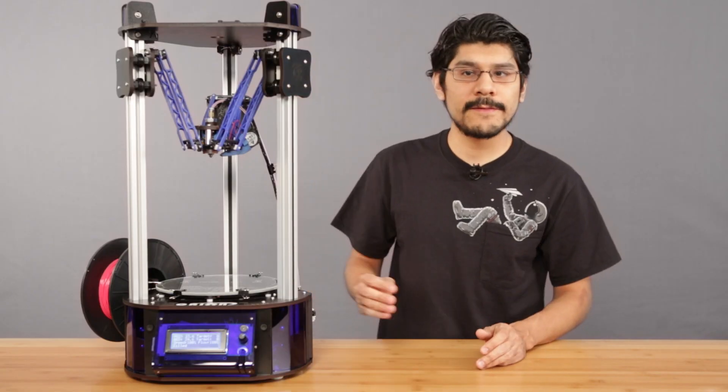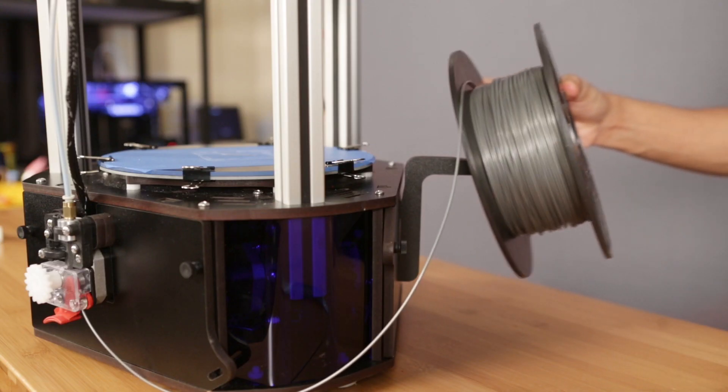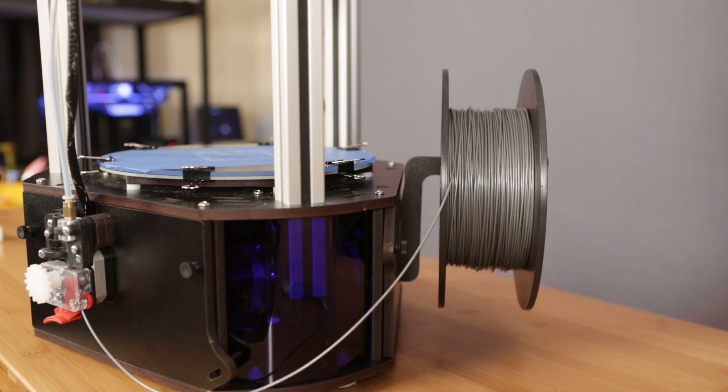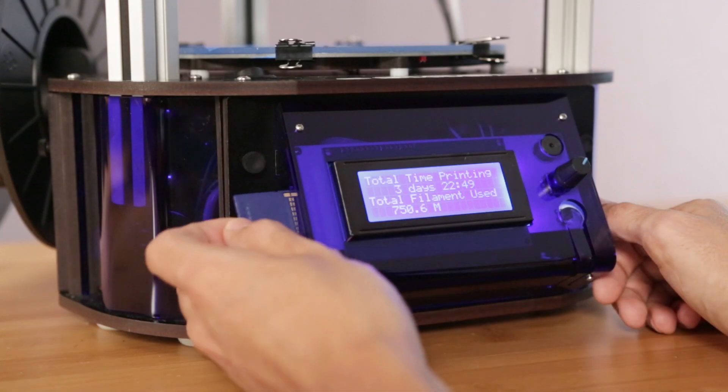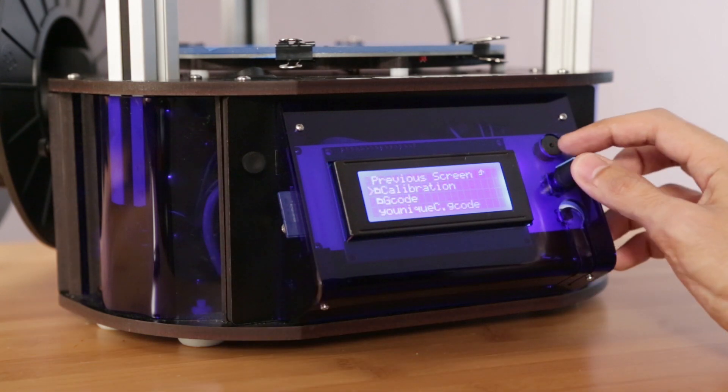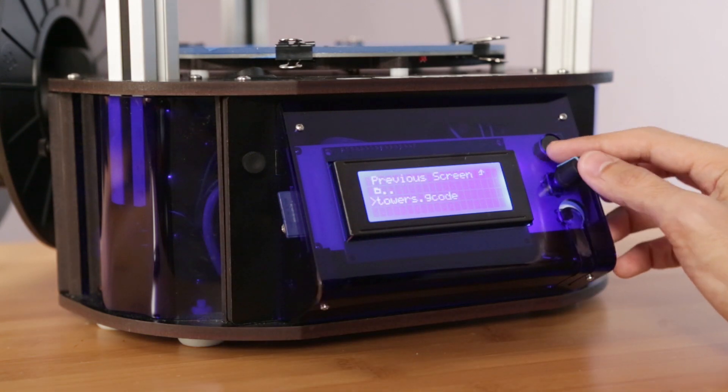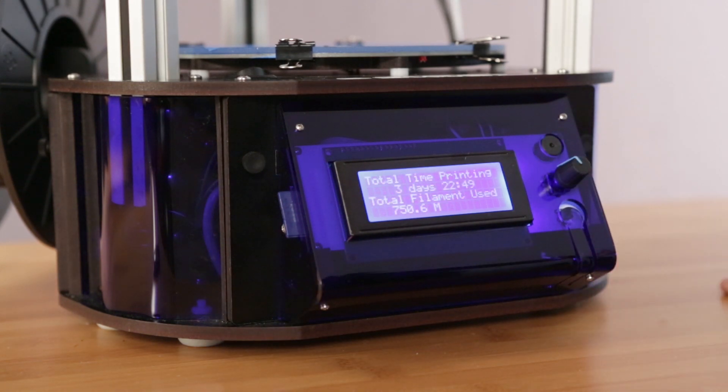Most filament spool sizes are gonna fit on the spool holder which is right here on the side. It's very convenient and it's actually removable. It also has a built-in SD card reader which makes it quick to kick off a print without ever having to connect it to a host computer. I really like that it has directory support so you can have folders within the SD card.